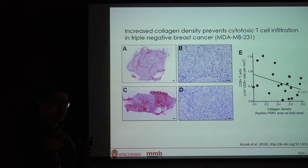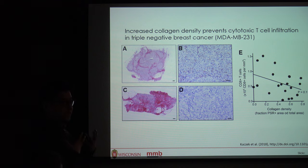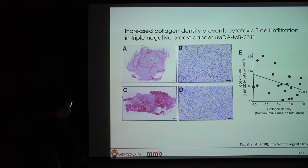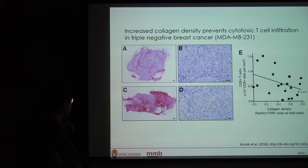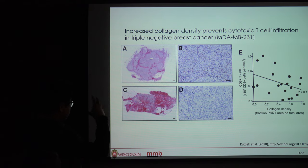Interestingly, the primary tumor secretes a dense matrix of collagen fibers around itself, which can act like a shield preventing immune cells from infiltrating and killing them. This work has demonstrated that in cases with increased collagen density, that thick collagen margin prevents infiltration of cytotoxic T cells. In the top panels, collagen is stained with Picrosirius red, and in panel B the T cells are shown in brown — a large distribution of T cells where there's less collagen, but very few T cells where there's more collagen.